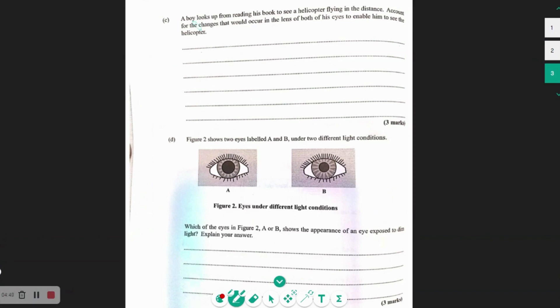Then C. A boy looks up from reading his book to see a helicopter flying in the distance. So I'll account with the changes that would occur in the lens of both his eyes to enable him to see the helicopter.